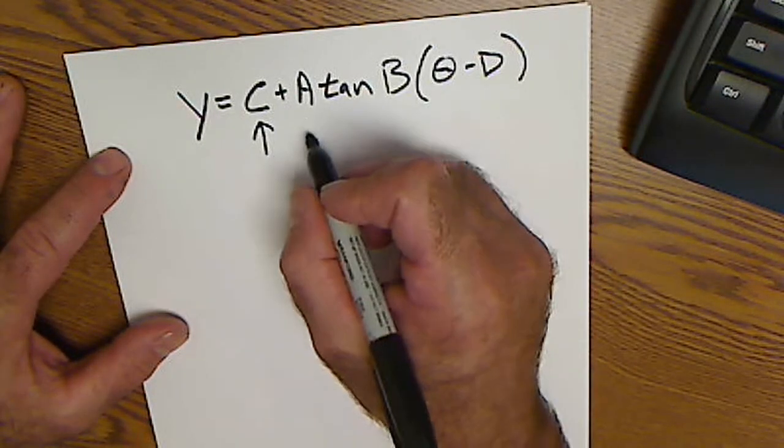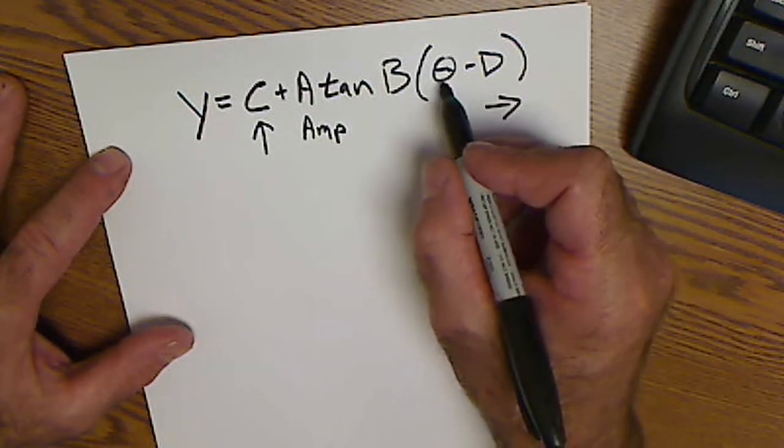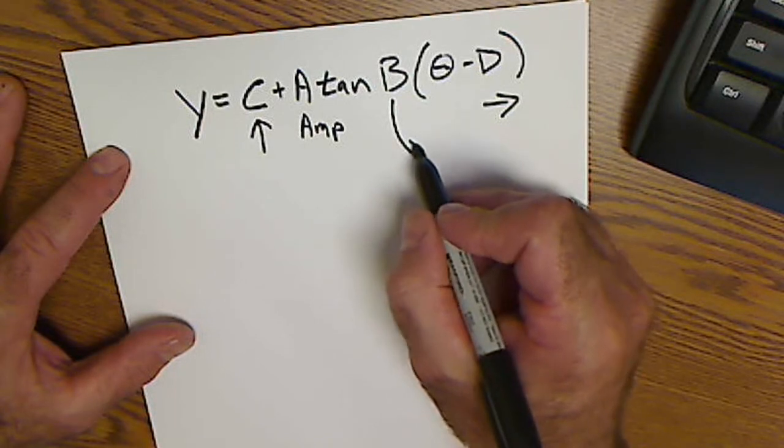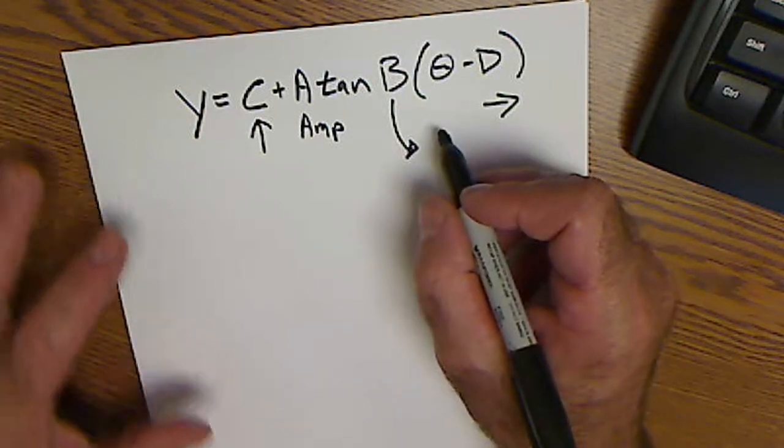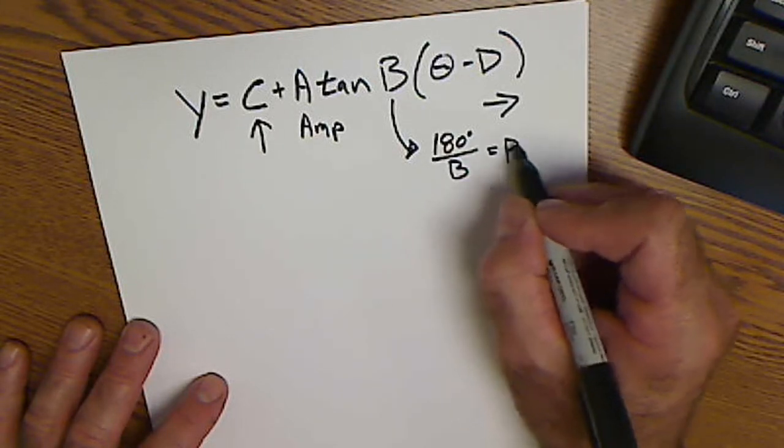This is vertical shift, amplitude. This D is a phase shift. Theta in degrees. The important thing to note: B in tangent—180 degrees divided by B gives me my period.